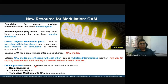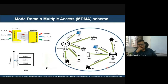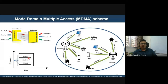OAM enables a mode domain multiple access scheme, where a specific OAM mode is transmitted in a specific direction for a specific user — multiplexing waves at different helical angles. The application space is vast but limited by the line-of-sight requirement, which remains an open research problem. Optical wireless communication can also be integrated: free space optical devices such as laser transceivers can be deployed atop buildings in metro areas for very high-speed connectivity.